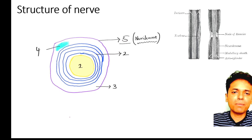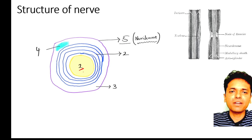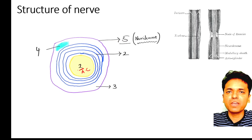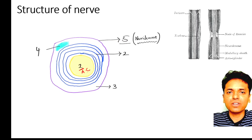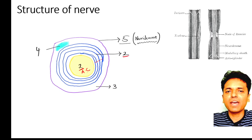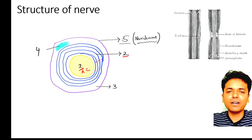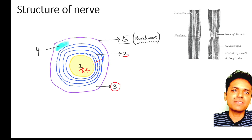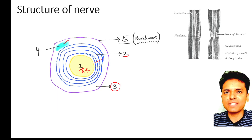This is the structure of a myelinated axon. This part is called the axis cylinder, which is nothing but the axon. Because this is a myelinated nerve fiber, this axis cylinder or axon is surrounded by many layers of myelin — labeled as number two, your myelin sheath. This myelin is formed by a cell called the Schwann cell, labeled as number three, and number four is the nucleus of the Schwann cell.